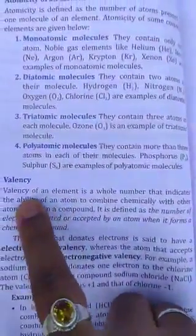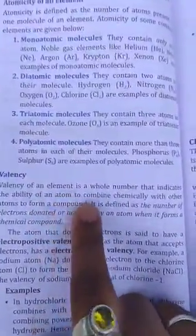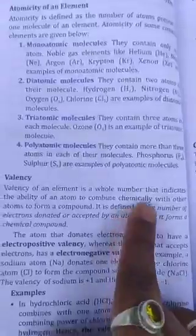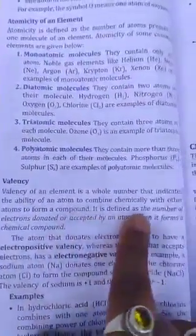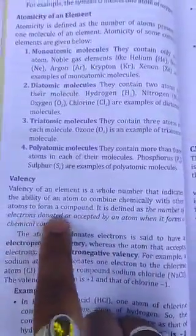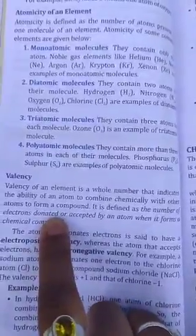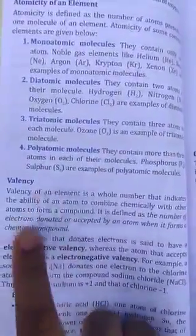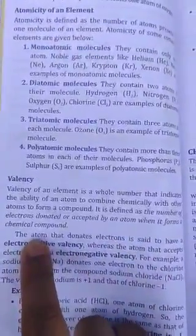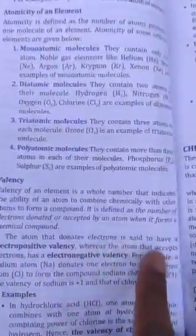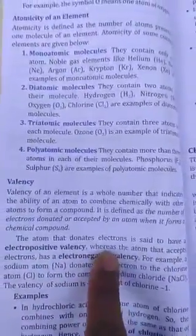Now, valency. What is valency? Valency of an element is a whole number that indicates the ability of an atom to combine chemically with other atoms to form a compound. It is defined as the number of electrons donated or accepted by an atom when it forms a chemical compound. The atom that donates electrons is said to have electropositive valency, whereas the atom that accepts electrons has an electronegative valency.